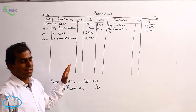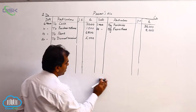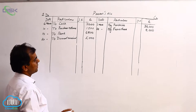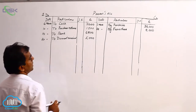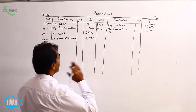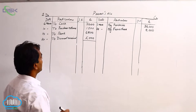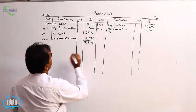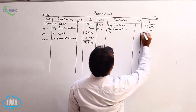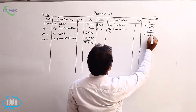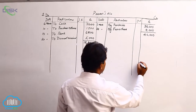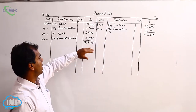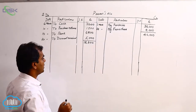We have posted all the transactions. Now I will show you how to balance the account — Pavan's account. To balance, one way to avoid confusion is to total both sides. The debit side total comes to eighteen thousand three hundred. Similarly, the credit side total comes to forty-six thousand. Now compare both totals — the credit side has forty-six thousand and the debit side has eighteen thousand three hundred.